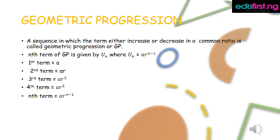The nth term of a GP is given by u_n, where u_n equals a times r raised to the power n minus 1. The first term equals a, the second term equals a times r, the third term equals a times r squared, the fourth term equals a times r cubed, and the nth term equals a times r raised to the power n minus 1.